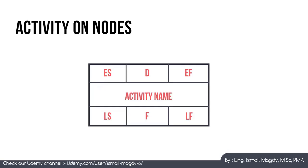Now we will learn the Activities on Nodes method. In this method, activities are shown as nodes containing specific data fields. The activity name is in the center. In the top-left corner is ES (Early Start), the earliest possible time for the activity to start. Next is D (Duration), the estimated duration of the activity.